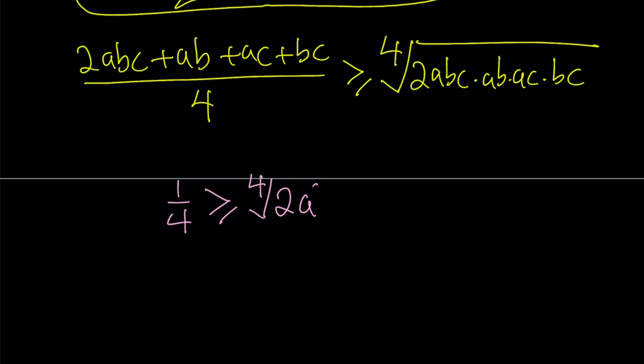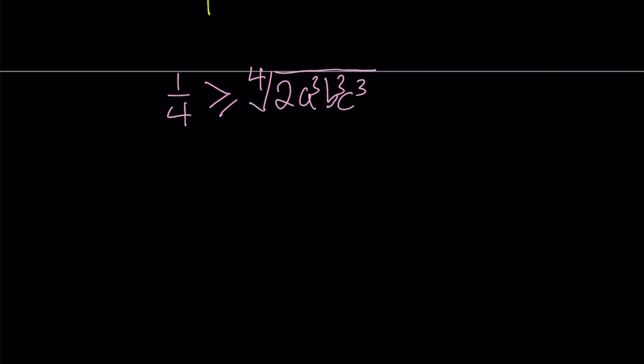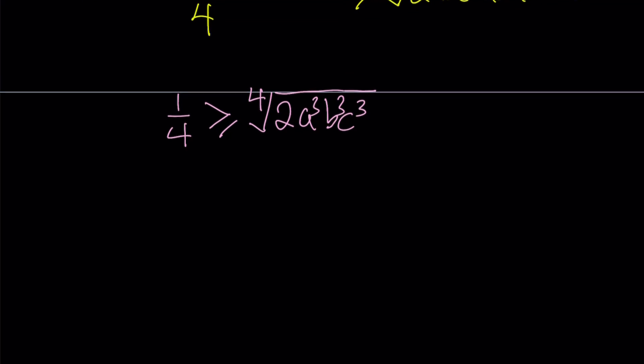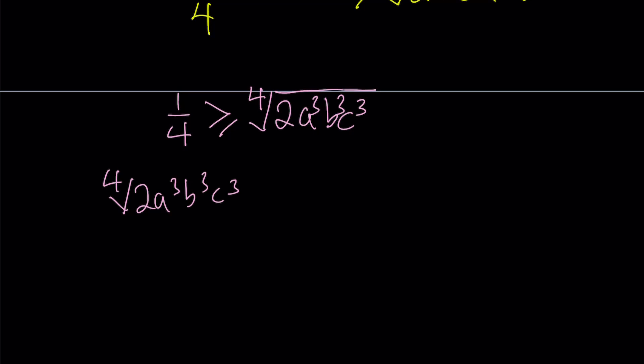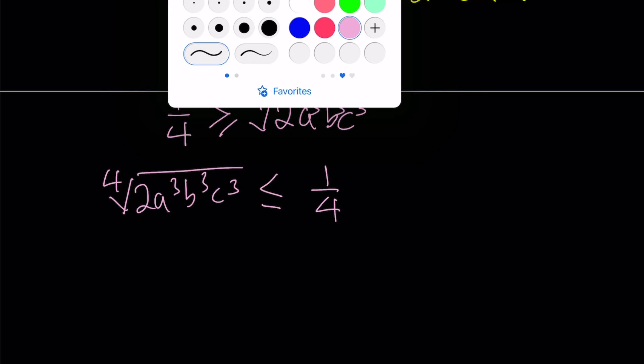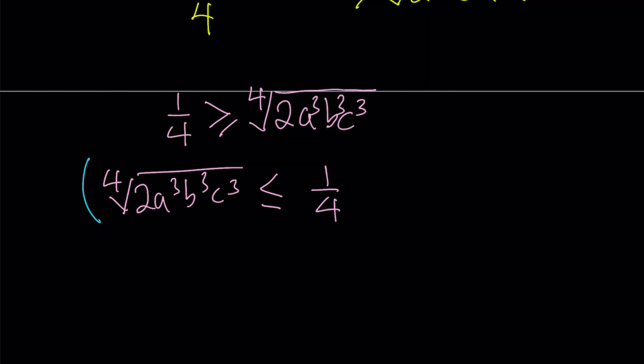And then it's going to be greater than or equal to the fourth root of the product. So that product is going to be 2 a cubed, b cubed, and c cubed because we have everything three times. Now, let's go ahead and put this on the left, on the right-hand side, the stuff on the right-hand side, let's put it on the left-hand side. And then we are going to raise both sides to the fourth power. So let's go ahead and write this as the fourth root of 2 a cubed, b cubed, c cubed is less than or equal to 1/4. At this point, if you want, you can multiply both sides by 4 and then raise both sides to the fourth power. It doesn't really matter. It's the same thing.